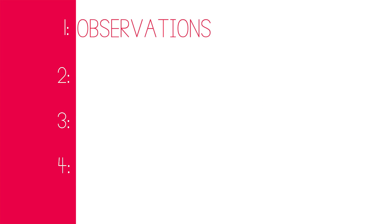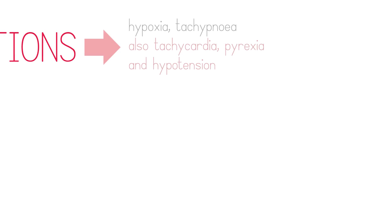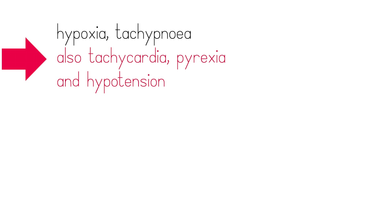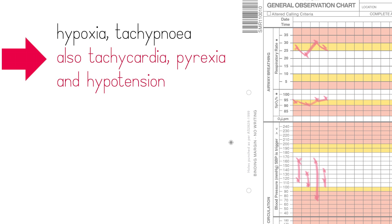Check the obs. Look for signs of hypoxia, as this indicates possible airway obstruction and indicates an emergency. Tachypnoea, tachycardia, pyrexia, and hypotension are all indicators of sepsis.